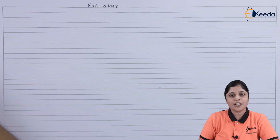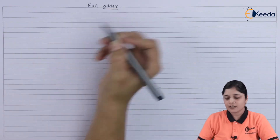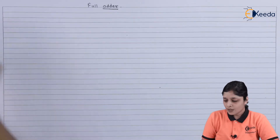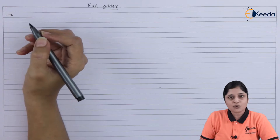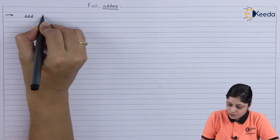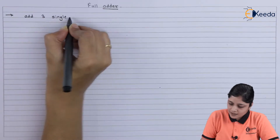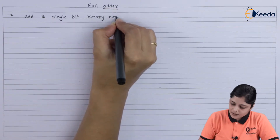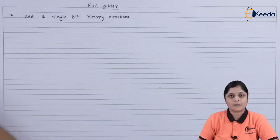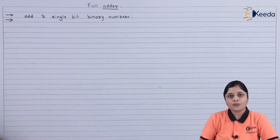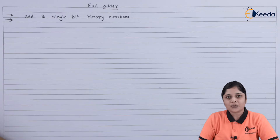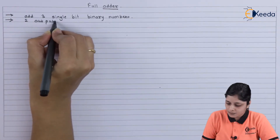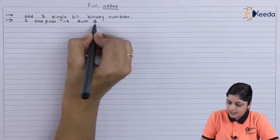Now, what is the basic logic behind a full adder? As the word here is adder, it is used for addition purposes. It is a part of arithmetic circuits. A full adder is used to add three single-bit binary numbers. For a full adder, two outputs are there: sum and carry.